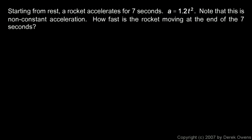Here's one more example. Starting from rest, a rocket accelerates for 7 seconds, and the acceleration is given by this function, 1.2t². Note that this is non-constant acceleration. And we're asked, how fast is the rocket moving at the end of the 7 seconds? Now, before I solve this, and this is going to be pretty quick to solve, let me say something about the physics here.